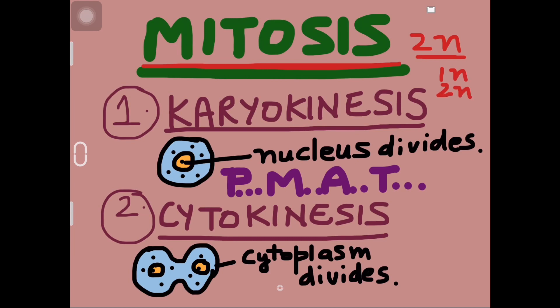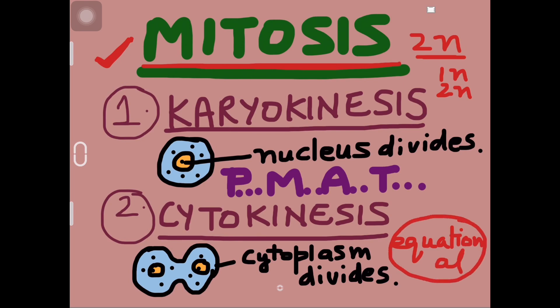In this division the number of chromosomes remains the same — that is the main feature. In the parents and the progeny, the number of chromosomes remains the same. Thus mitosis is also called equational division. It is divided into two parts: karyokinesis and cytokinesis.